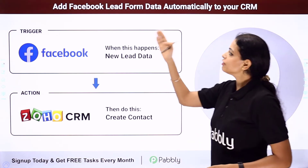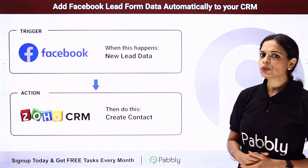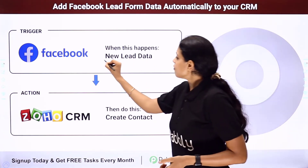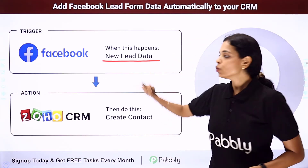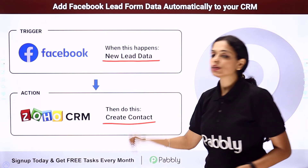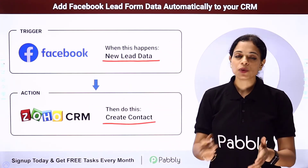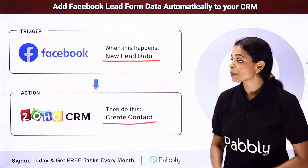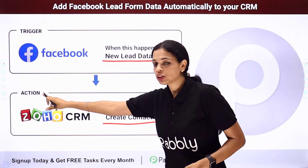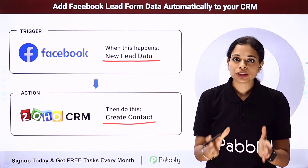In this video, we are going to see how to add Facebook lead form data automatically to your CRM. Let's say you are using Facebook lead ads to enhance your sales, and every time there is a new lead, you want this particular data to be added as a contact in Zoho CRM. Your trigger application would be Facebook and your action would be Zoho CRM. Let me take you to my screen to show you how.